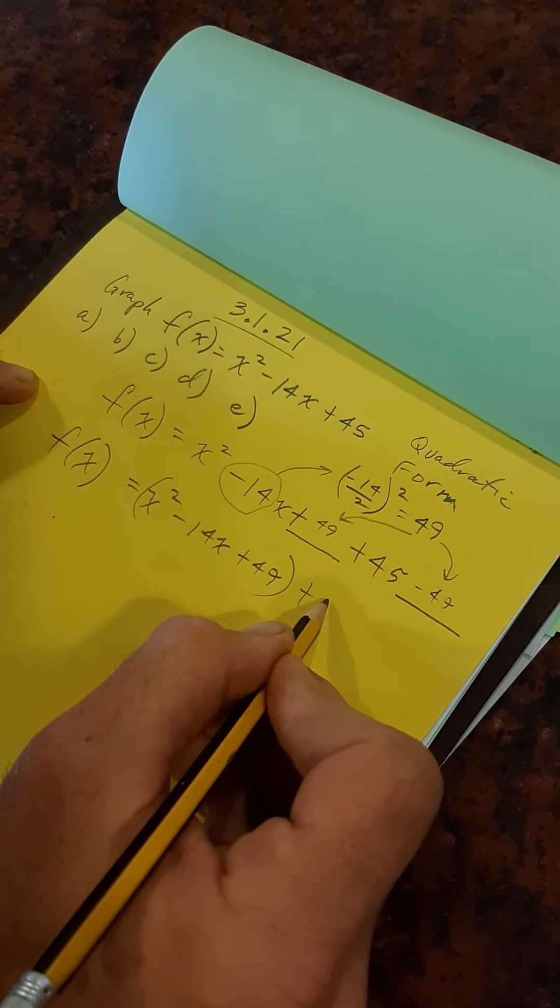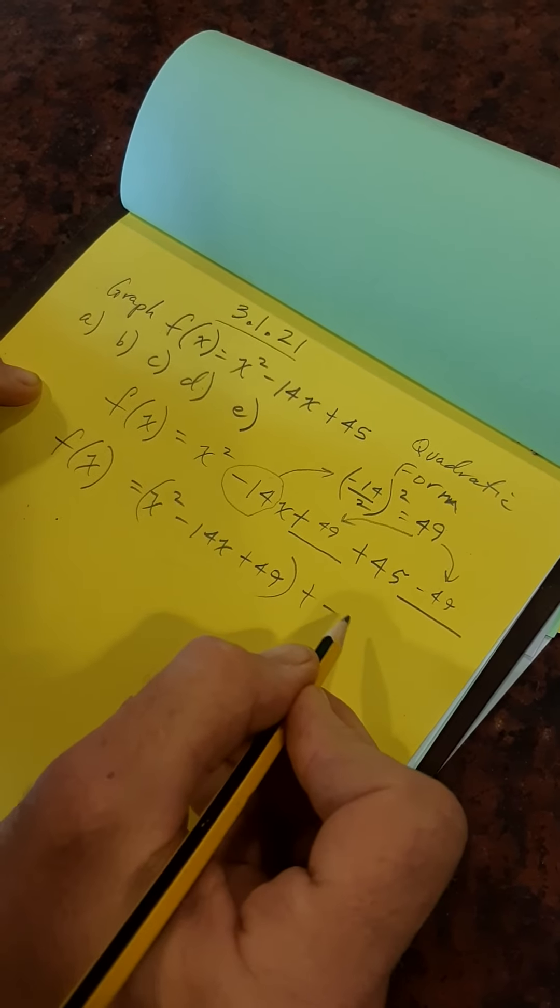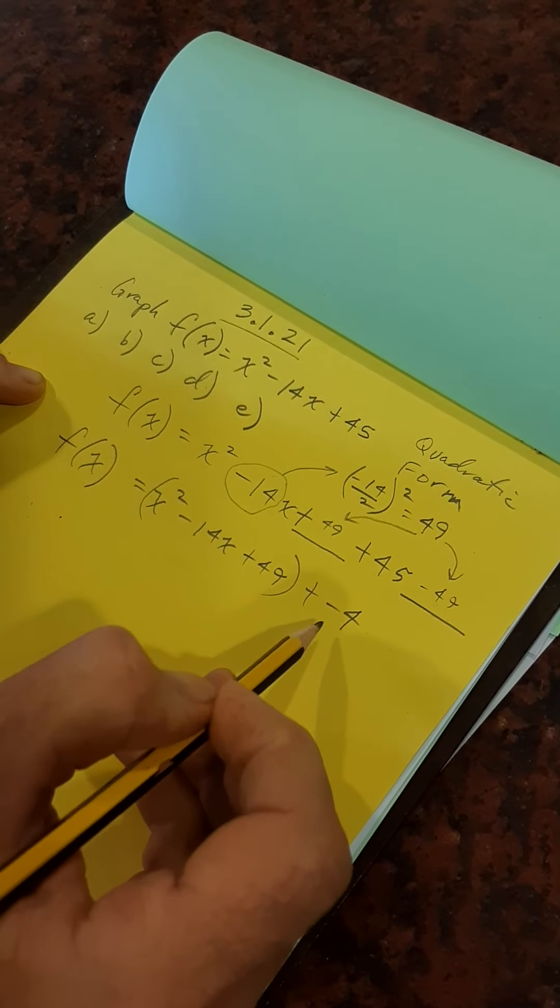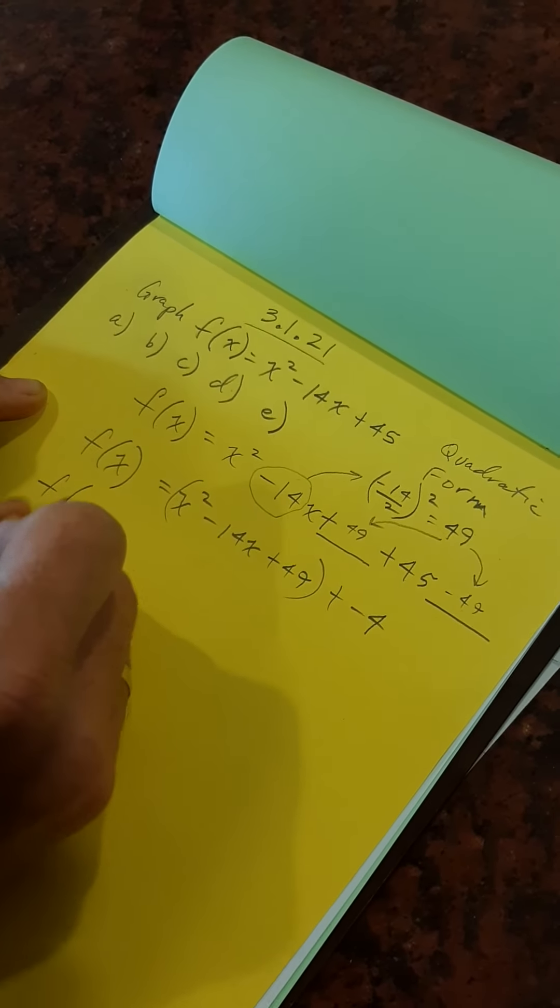F of x equals x squared minus 14x plus 49, we're going to keep that, I'm going to put that in the brackets. Plus 45 minus 49, that'll be, I'll go ahead and add it. Minus 4, right? 45 minus 49. So, simplify here.